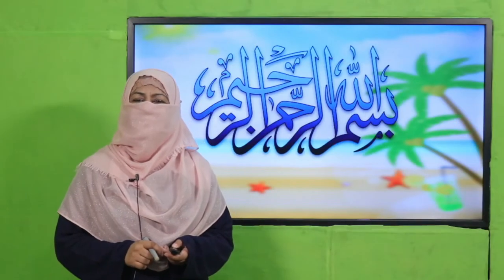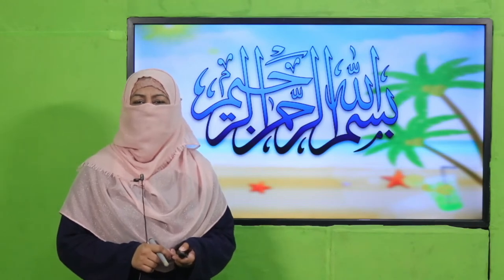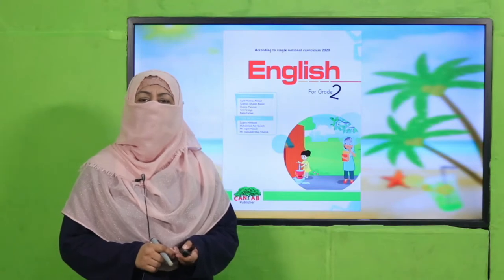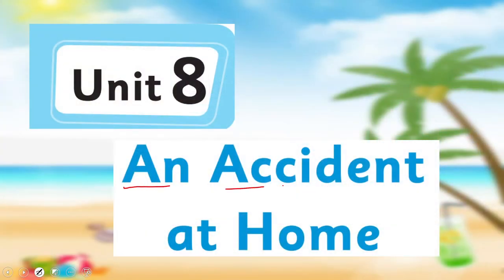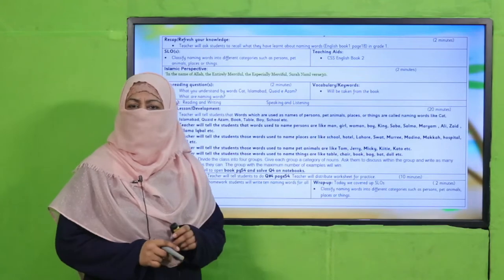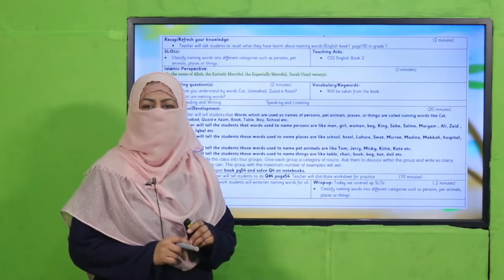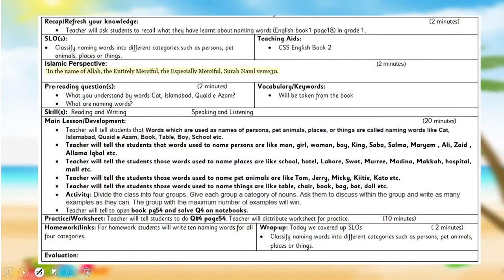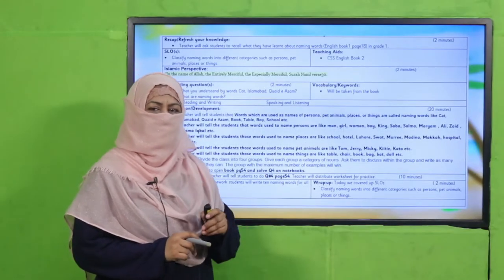Bismillahirrahmanirrahim. Assalamu alaikum, my dear students. How are you? I hope you are enjoying the best of health. I welcome you in my class — English for Grade Two. We are learning Unit A, whose title is 'An Accident at Home.' Fellow teachers, this lesson plan, PowerPoint presentation, and worksheet links are given. You may click and download it, follow it as is or modify it for your convenience. I am going to deliver my lecture according to this lesson plan.